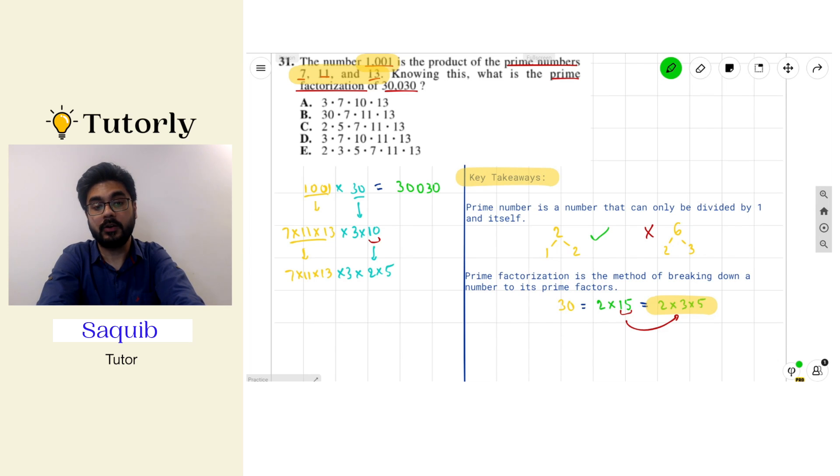And now I realize that all the numbers on this list are prime numbers. So the prime factorization of 30,030 is 2 times 3 times 5 times 7 times 11 times 13, which is option number E. And that's our answer. Thanks.